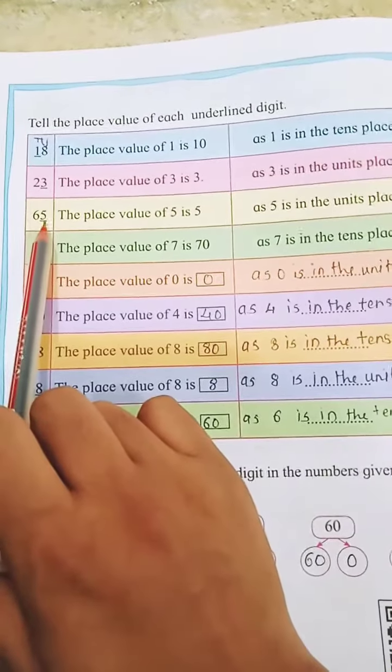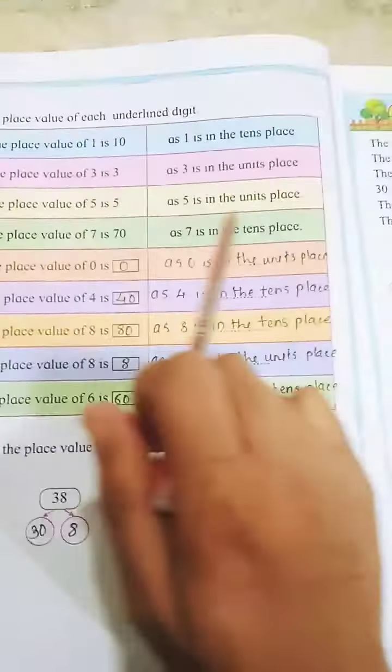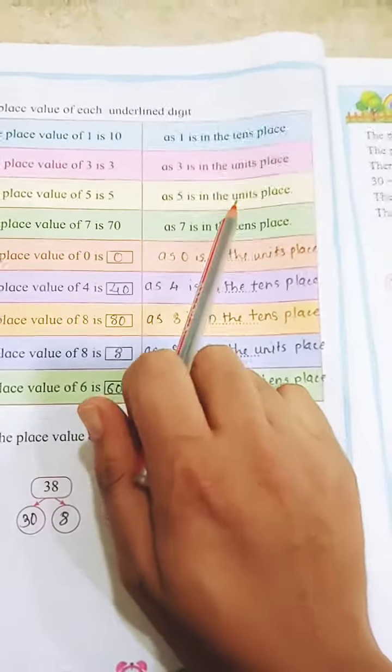As 5 is in which place? As 5 is in the unit's place.